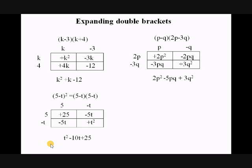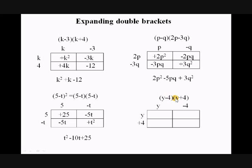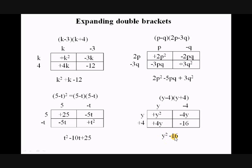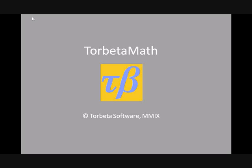Lastly, let's look at this interesting one: (y minus 4) times (y plus 4). Using the grid: y times y gives y squared; minus 4 times y gives minus 4y; plus 4 times y gives plus 4y; and 4 times minus 4 gives minus 16. I notice these two middle terms, plus 4y and minus 4y, cancel out, so my answer is y squared minus 16. This is called the difference of two squares, because y squared and 16 are both squares. Thank you for watching.